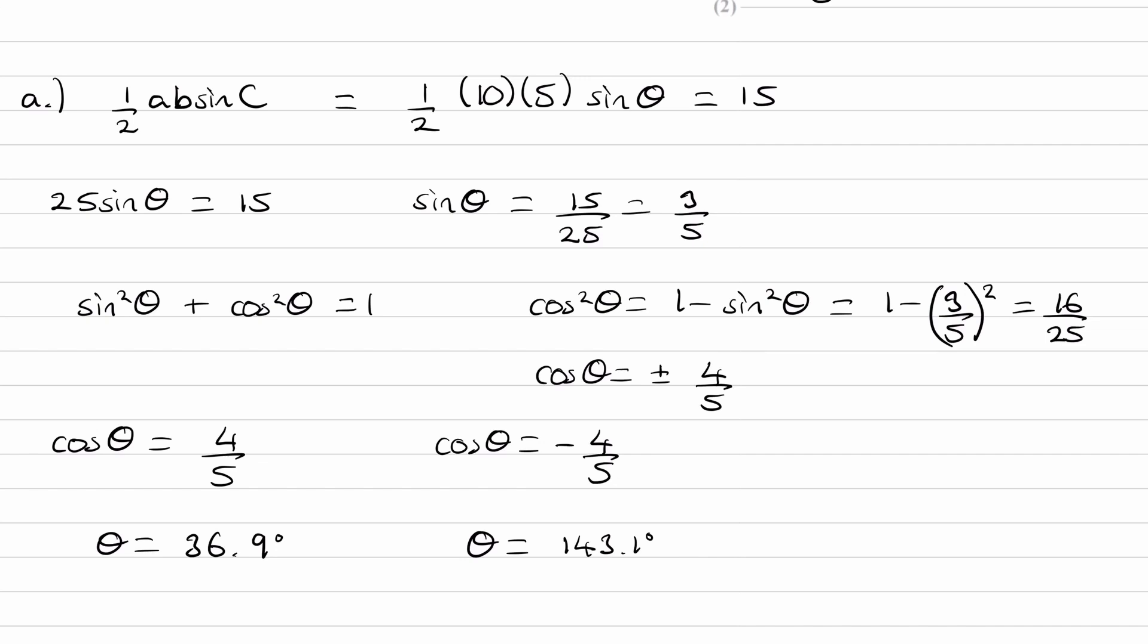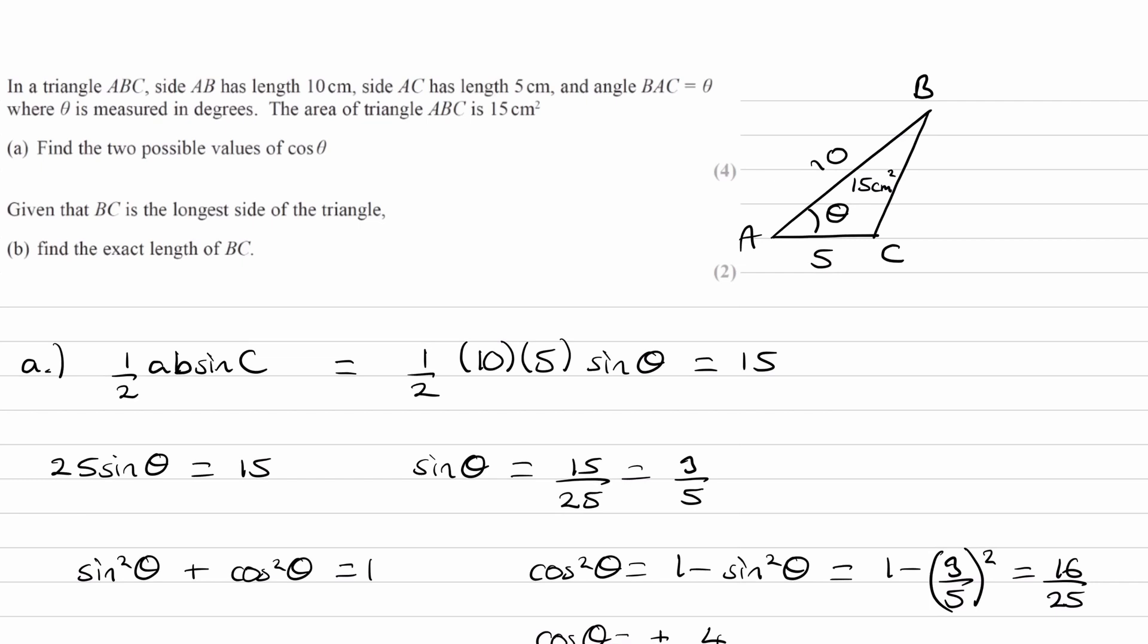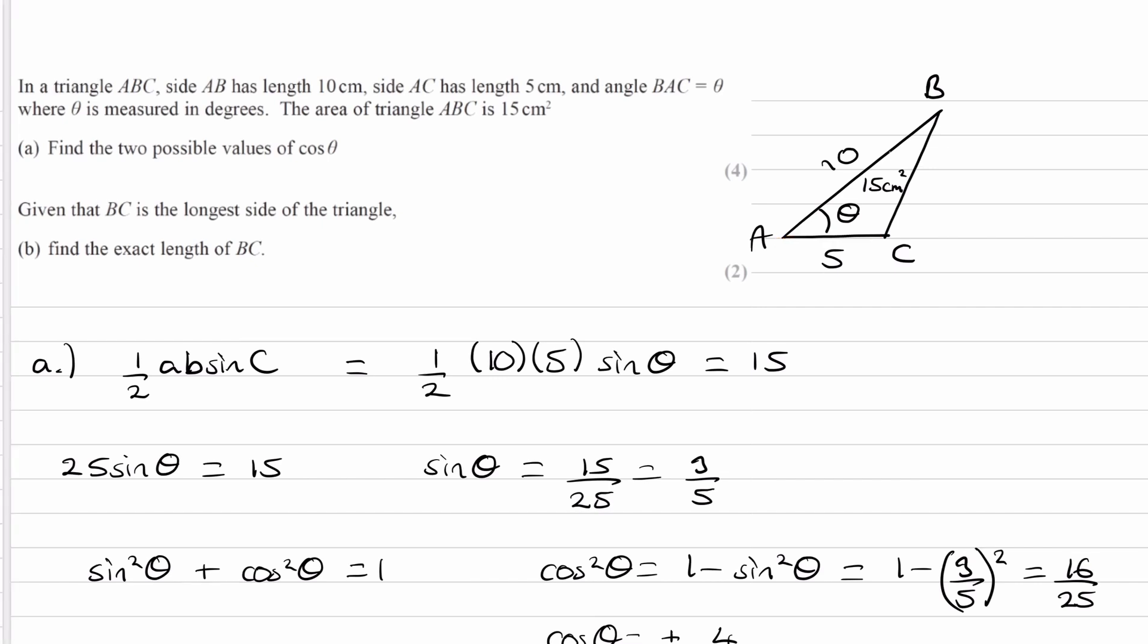We need to think about which angle of theta would make BC the longest side of the triangle. If you look at our triangle, this length here is BC. If we were to increase the angle of theta, keeping AC where it is and bringing AB over this way, pivoting it about A, you're increasing this angle theta. As you increase that angle, you will increase the length of BC. You're basically opening up the triangle and making this length here longer.